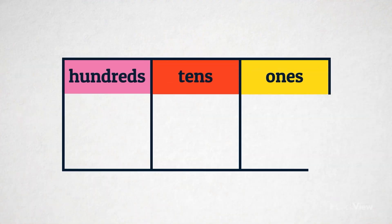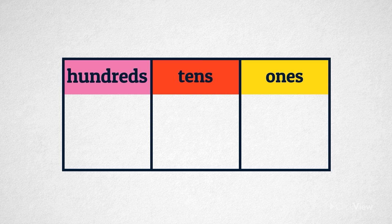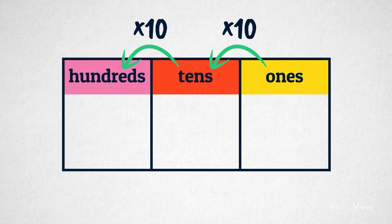You've probably seen a place value chart before. Each column has a different name, which is its value. The value of each column is 10 times larger than the column to its right.